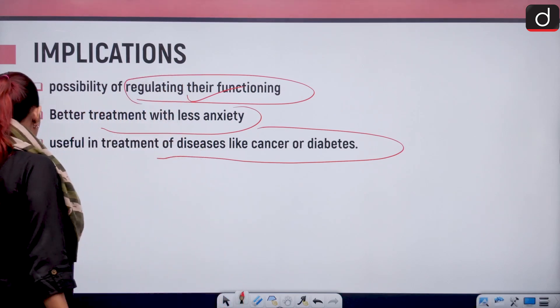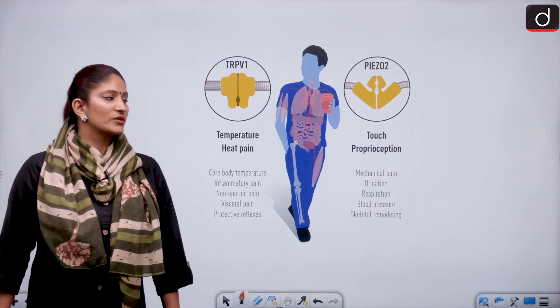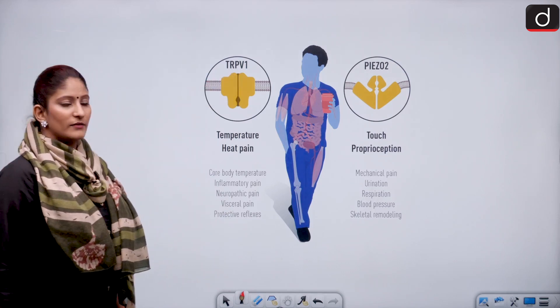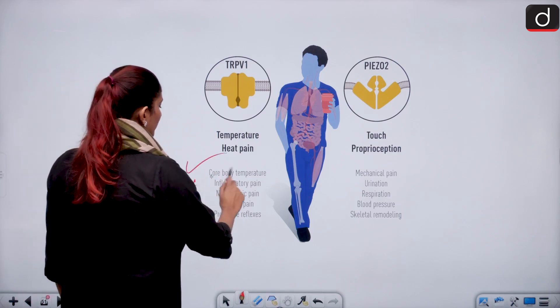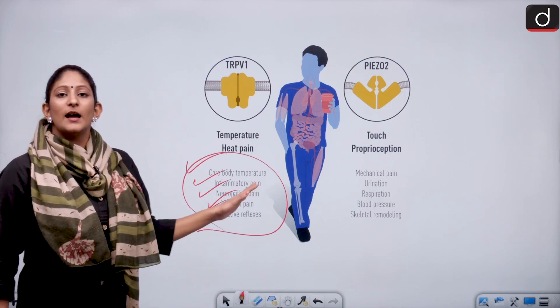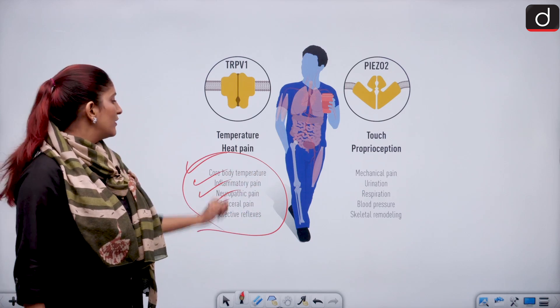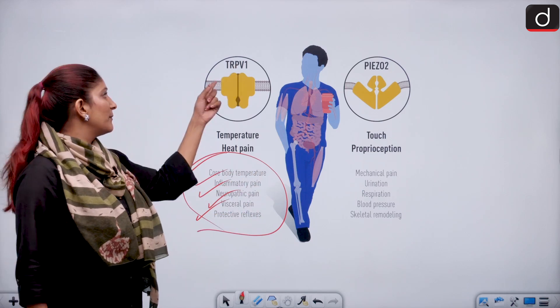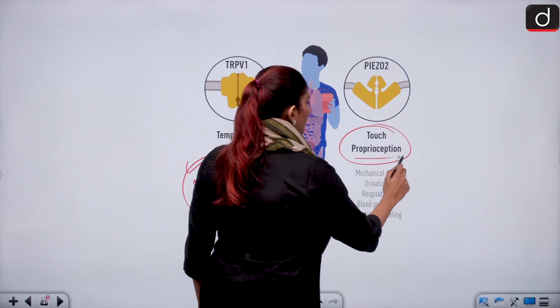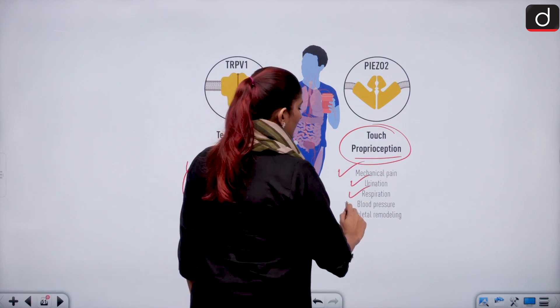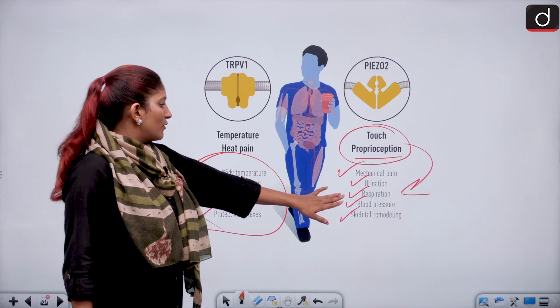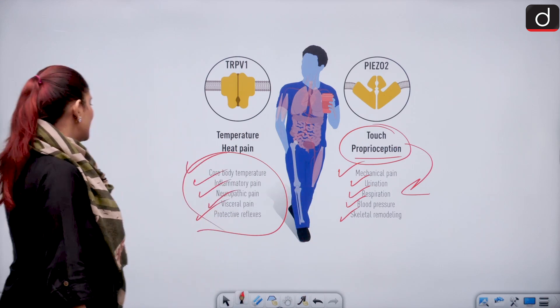Let's move forward and look at this diagram. This is also sourced from the Nobel website. Temperature, heat and pain through TRPV1. We have core body temperature, inflammatory pain, neuropathic pain, visceral pain and protective reflexes. These are the different sections where we can have a look into through TRPV1 that is for temperature, David Julius remember. Second is Piezo. Touch, proprioception, mechanical pain, urination, respiration, blood pressure, skeletal. This is all related to pressure, right? So also keep this in mind. You can take a screenshot. These many sectors are related to it.